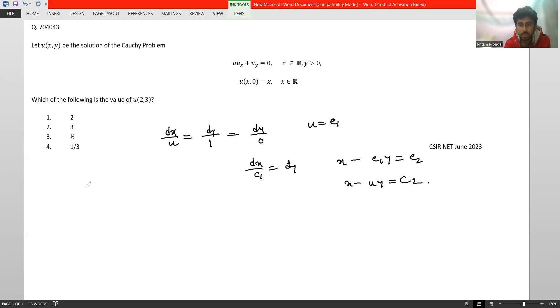Therefore, our general solution becomes u = φ(x - u*y), where φ is an arbitrary function.